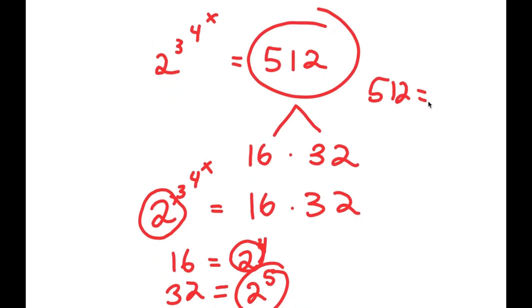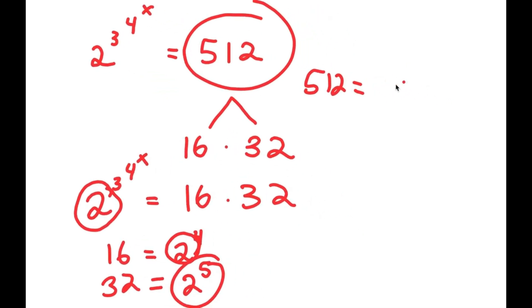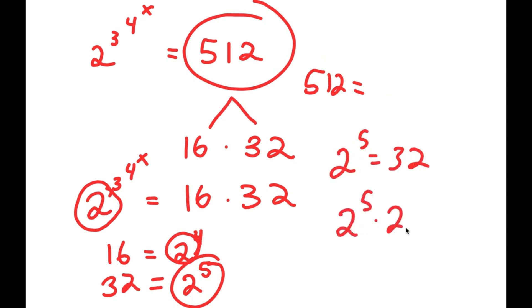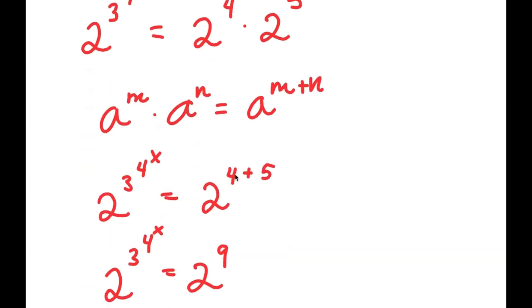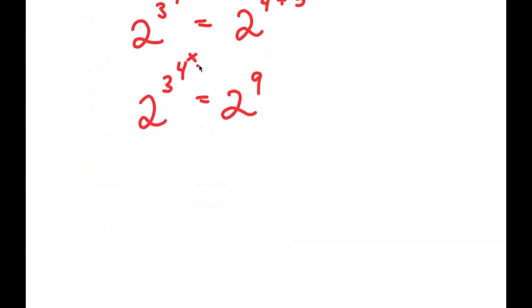Also, instead of doing all that, remember at the start we had 2 to the power of 3 to the power of 4 to the power of x equals 512. We know that 2 to the power of 5 is 32, so 512 is 2 to the power of 5 times 2 to the power of 4, which is 2 to the power of 9. So we could have just said at the start that 512 equals 2 to the power of 9, but some people don't know that, so that's why we did all of that. Going back, we have 2 to the power of 3 to the power of 4 to the power of x equal to 2 to the power of 9.